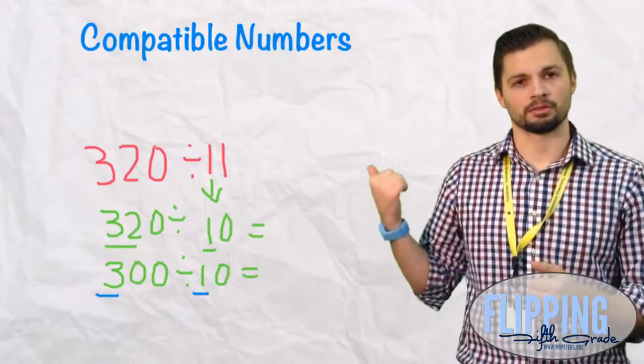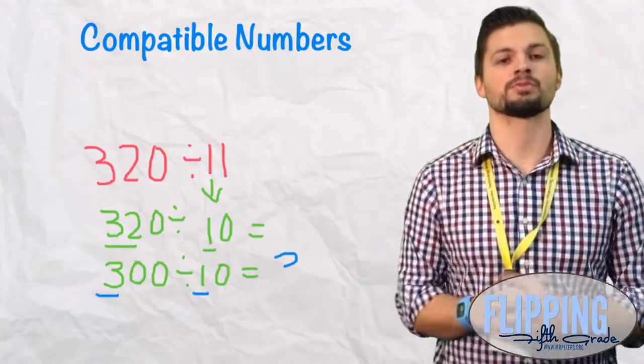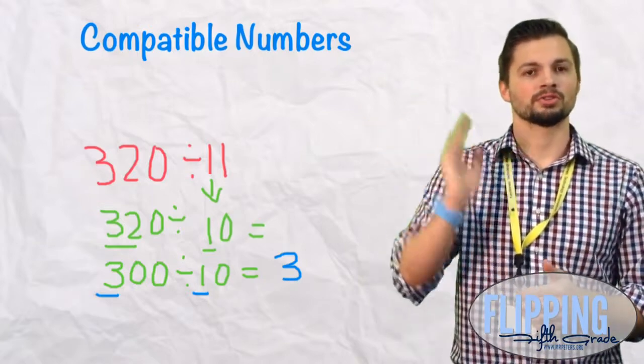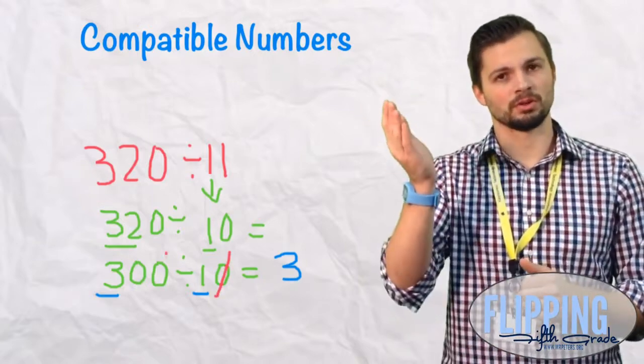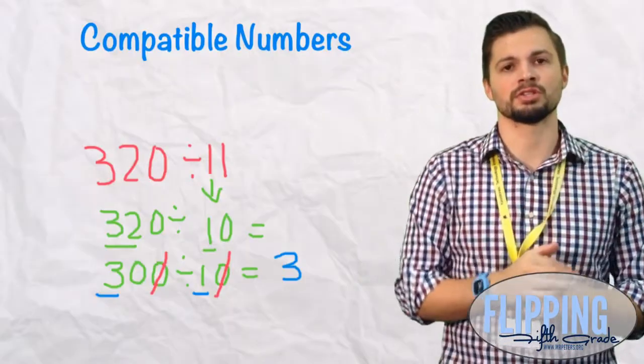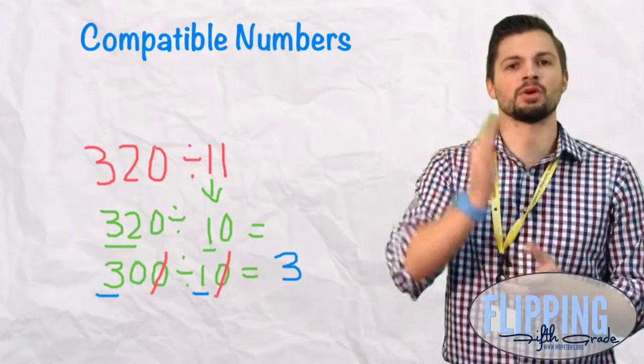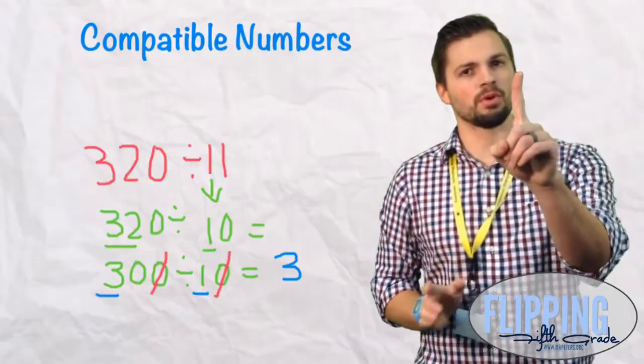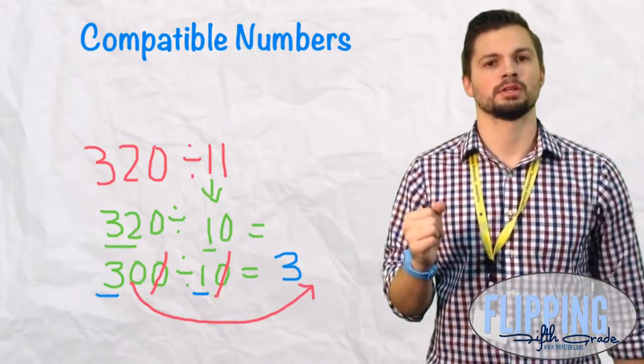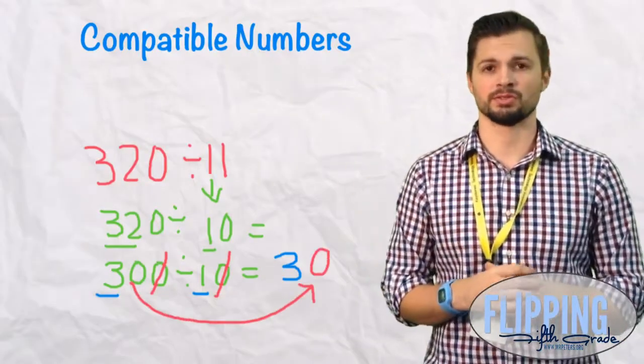We do the math. 3 divided by 1 is 3. Now we go to our divisor. There's one zero in our divisor and there's two zeros in the dividend. So we can cross off one zero on each side. We do have one extra zero that needs to be brought over to the quotient. So our answer is 30.